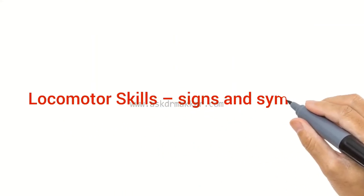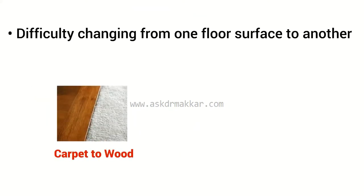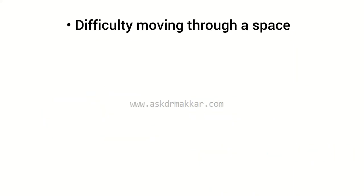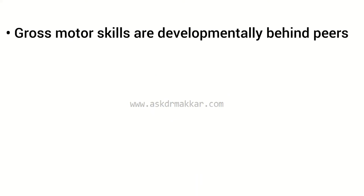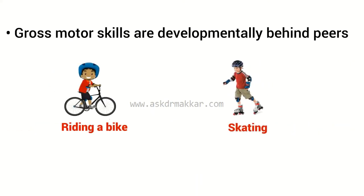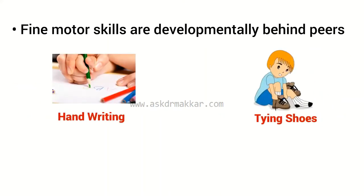Difficulty transitioning from one activity to another in school. Locomotor skills signs and symptoms: walks on toes; unusual gait; difficulty changing from one floor surface to another such as carpet to wood or sidewalk to grass; difficulty moving through a space, bumps into objects or people. Gross and fine motor skills are developmentally behind peers — riding a bike, skating, running, handwriting, tying shoes, and using scissors.